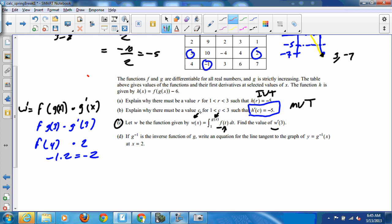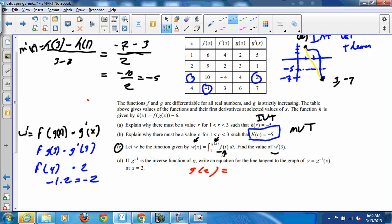Okay, part D. Part D says that if g to the negative 1 is the inverse function of g, write an equation for the line tangent to the graph at y equals g inverse at x equals 2. So at x equals 2, well what is g of 2? Let's take a look at that first. g of 2, let's slide up a little bit. g of 2 is equal to 3.